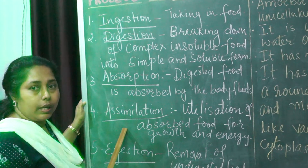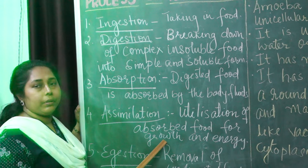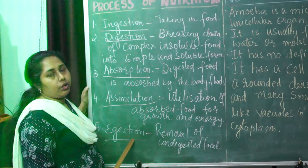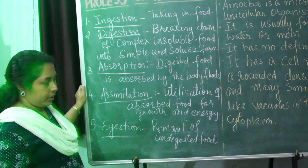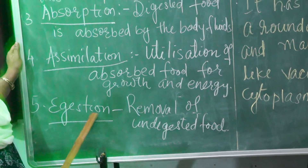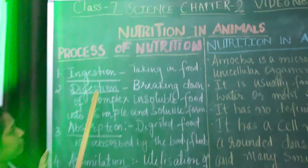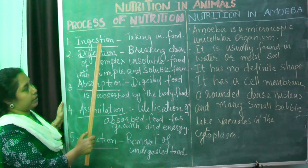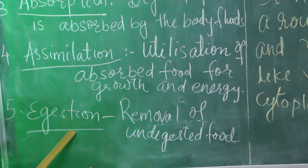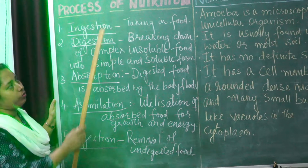The fourth step is assimilation. The absorbed food is utilized by the body for releasing energy and for proper growth and development. This process is known as assimilation. The last step is egestion — all undigested food is removed from the body. These are the 5 basic steps of the process of nutrition: ingestion, digestion, absorption, assimilation, and egestion.